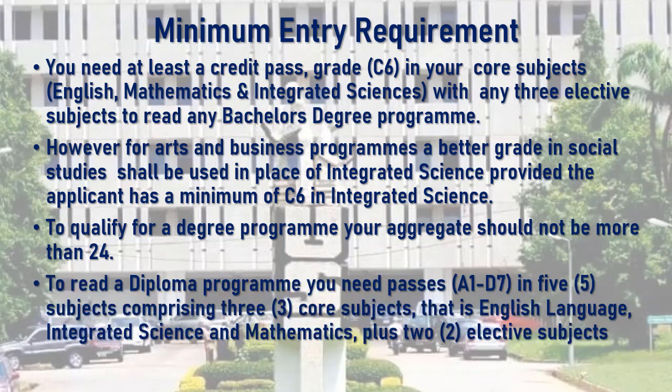To read a diploma program, you need passes of A1 to D7 in five subjects comprising three core subjects — English Language, Integrated Science, and Mathematics — plus two elective subjects.